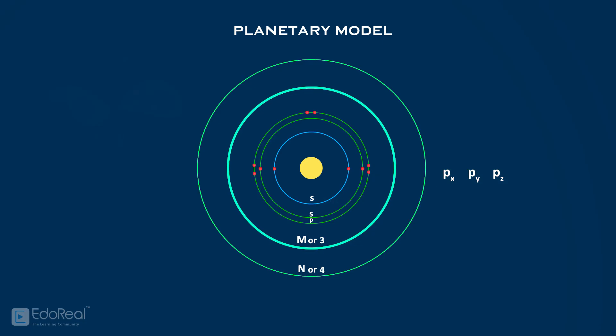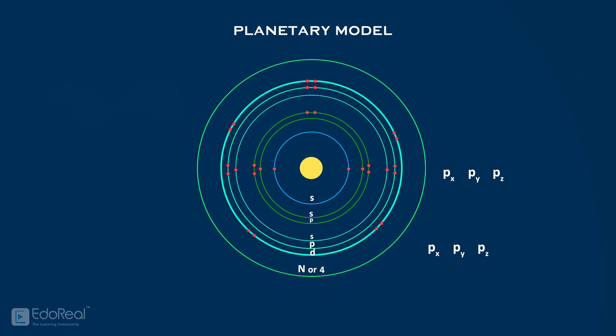The M-orbit or third energy level represents s orbital, p-subshell, and d-subshell. Where p-subshell represents px, py, pz orbitals, and d-subshell represents dxy, dyz, dzx, d x-square minus y-square, dz-square orbitals. Here, 9 orbitals contain 18 electrons.